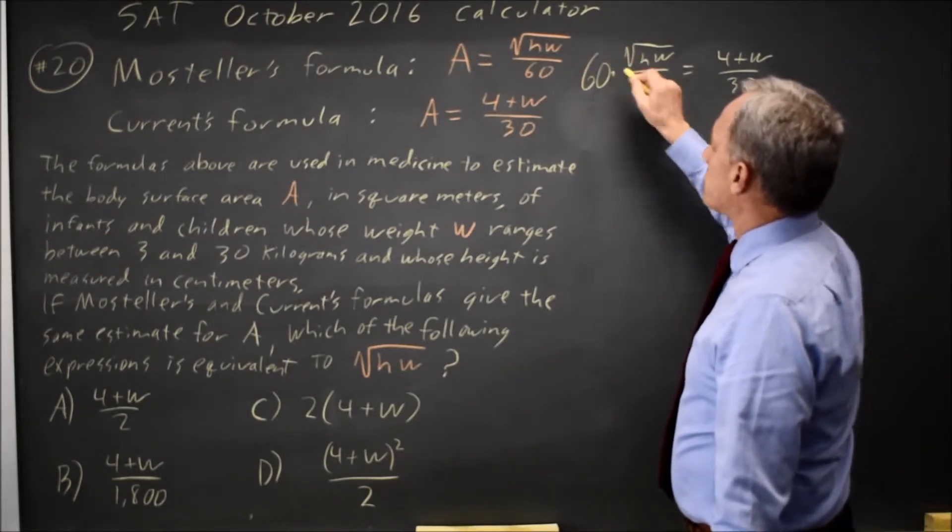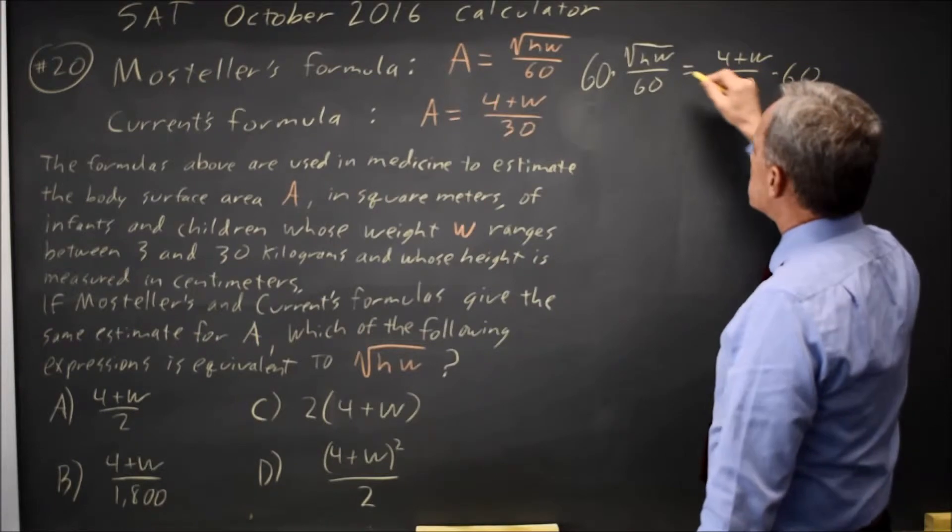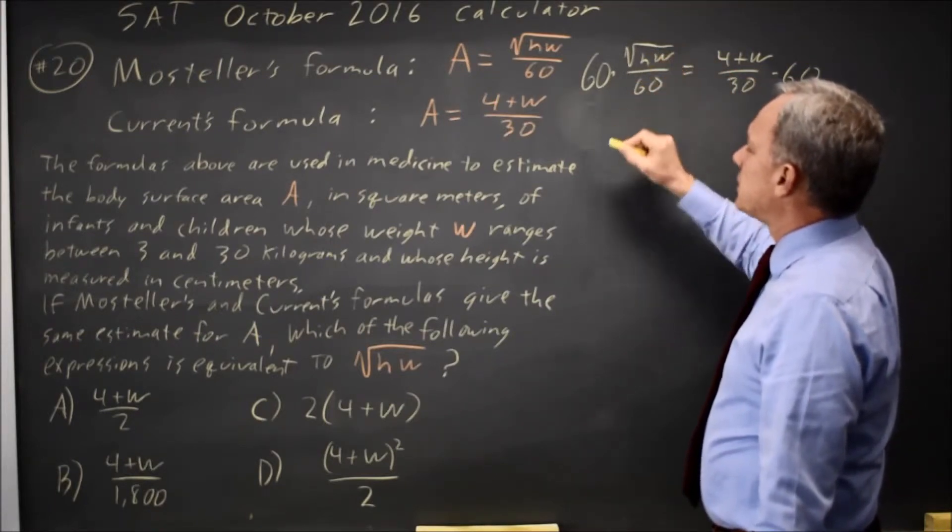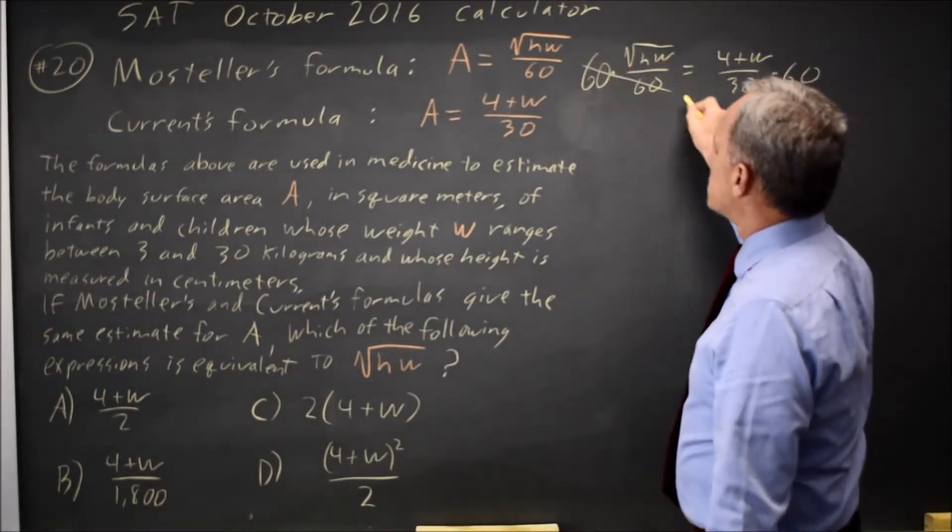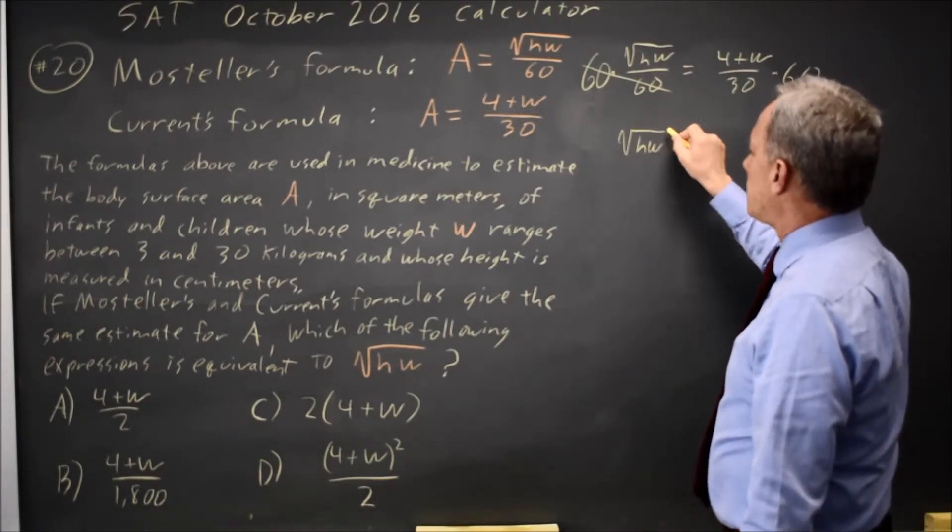So let's multiply both sides by 60 since root HW is divided by 60. And 60 times 1 over 60 is 1, so I have just square root of HW on the left.